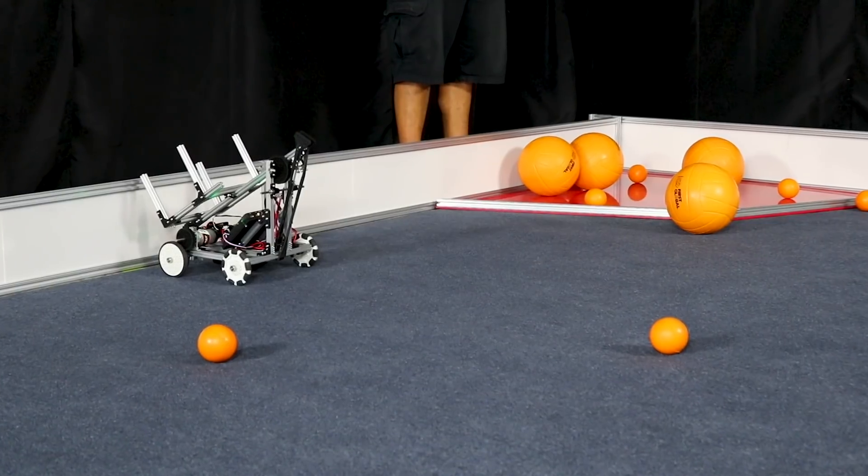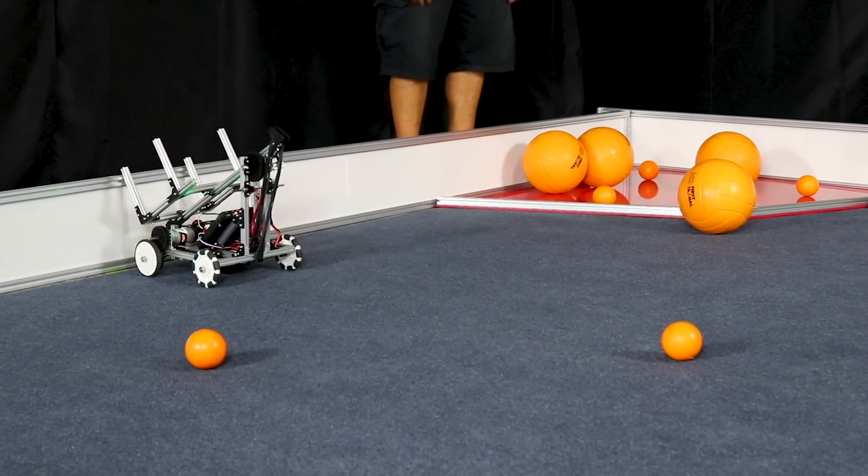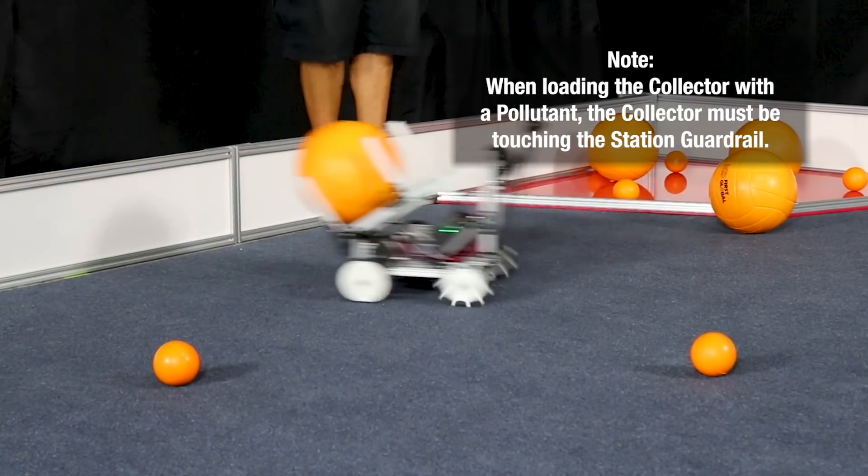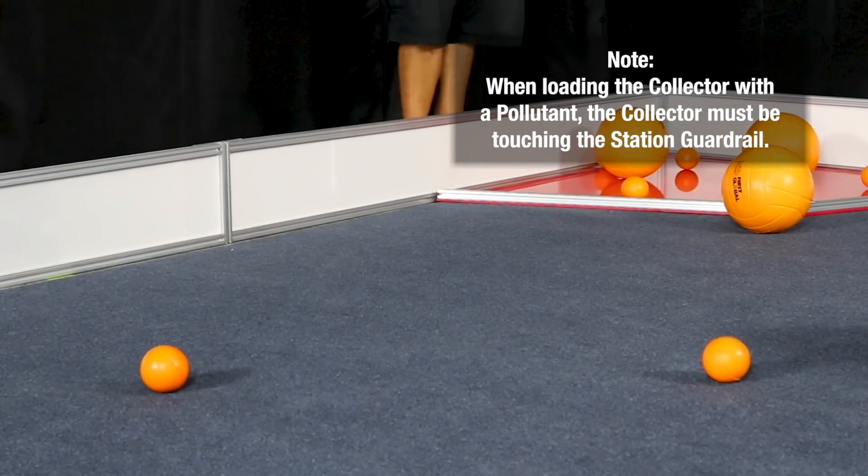Also, human players have the ability to remove pollutants from their reduction processing hub and load them directly into their collectors, or can return them to the ocean for collectors to score elsewhere.